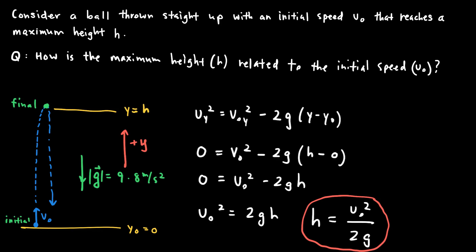One important piece of information from this derivation: if I were to double the initial speed v_naught, then the maximum height would actually become 4 times larger. That may seem counterintuitive, but because there's a squared relationship between h and v_naught, if v_naught becomes twice as big, the maximum height will be 4 times larger.